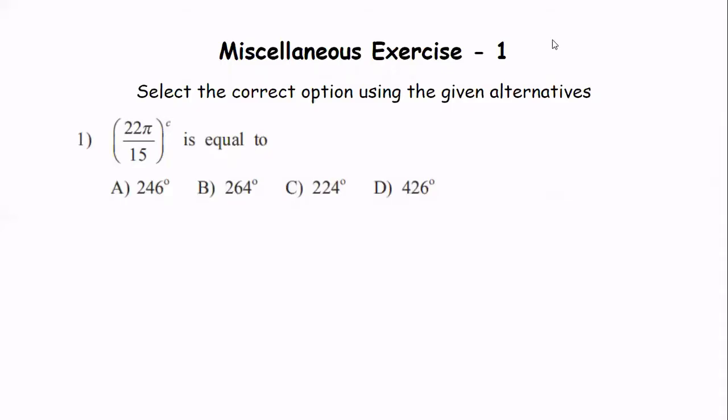In today's lecture we will be solving questions from Miscellaneous Exercise 1, which is the last section of the Udemy course. Select the correct option using the given alternatives. The first question: 22π/15 radians is equal to what — options A, B, C, or D. There are four alternatives and we need to solve and get the answer.